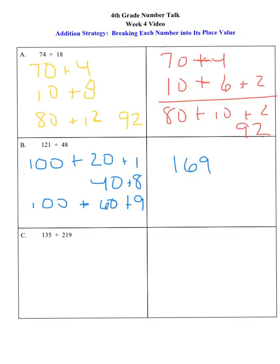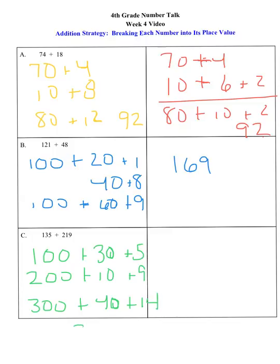C would again be 100, 30, 5. It would be 200, 10, 9. So it would be 300, 40, plus 14. So your answer would be 354.